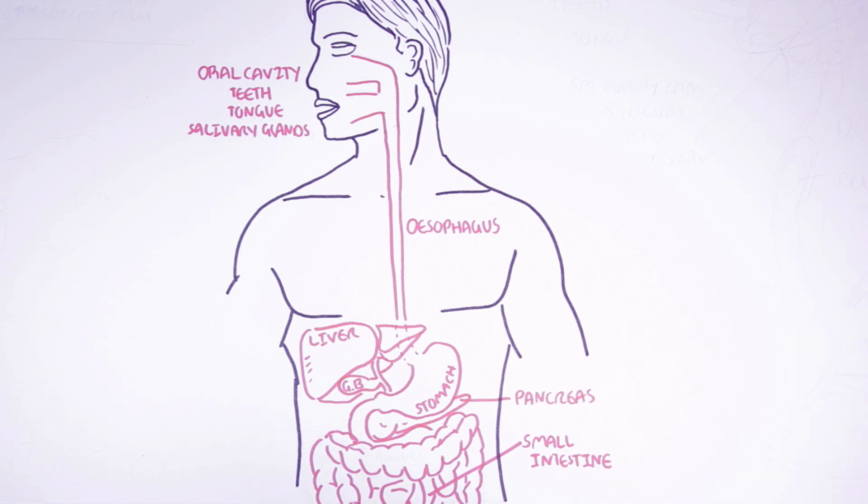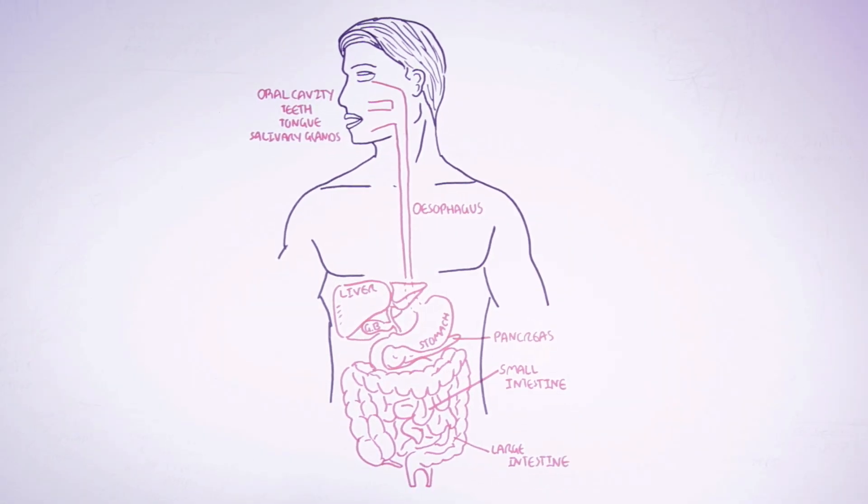Without the proper function of these accessory organs, food will not be digested properly and consequently will not be absorbed, resulting in gastrointestinal diseases such as malnutrition.